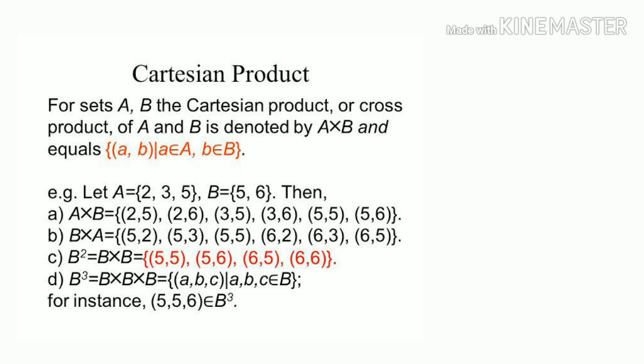Cartesian product or cross product. For sets A and B, the Cartesian product or cross product of A and B is denoted by A cross B, and equals the set of (a, b) such that a belongs to A and b belongs to B. For example, let A equal to {2, 3, 5} and B equal to {5, 6}. Then A cross B equal to {(2,5), (2,6), (3,5), (3,6), (5,5), (5,6)}. B cross A equal to {(5,2), (5,3), (5,5), (6,2), (6,3), (6,5)}. B squared equal to B cross B, which is equal to {(5,5), (5,6), (6,5), (6,6)}. B cubed equal to B cross B cross B, which is equal to the set of (a, b, c) such that a, b, c belongs to B. For instance, (5, 5, 6) belongs to B cubed.